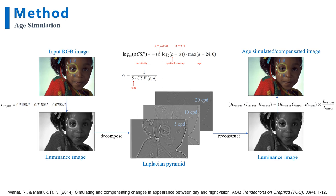The core of this algorithm is to adjust the pixel values in the Laplacian pyramid. Note that we can either increase or decrease the pixel values. If we decrease the pixel values, it will make the reconstructed image more blurry, which corresponds to the age simulation algorithm. If we increase the pixel values instead, it will make the reconstructed image sharper, which means we can also generate compensation images for the age-related vision degradation.